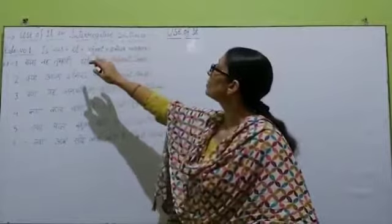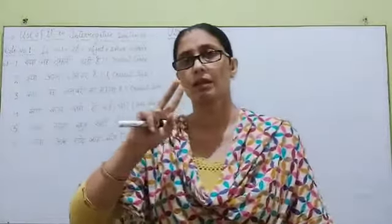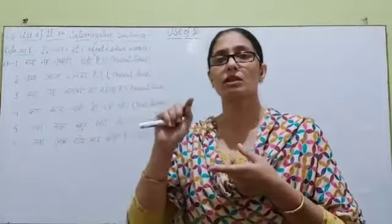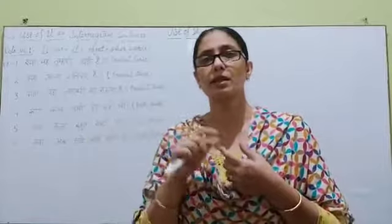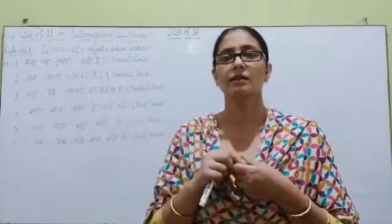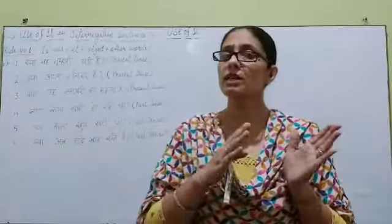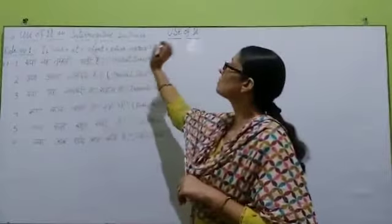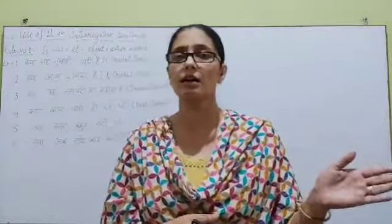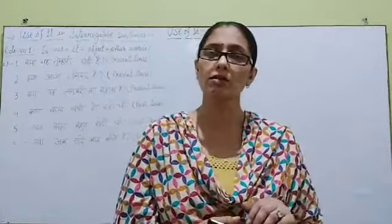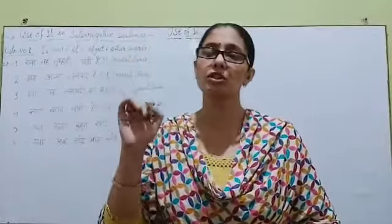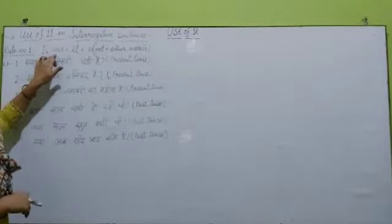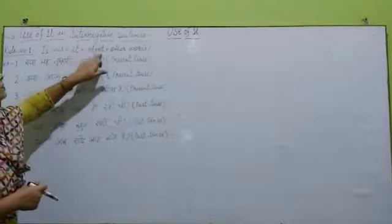So now we can see that we have two rules in interrogative. The first rule applies to sentences which start with 'is this your house' or 'are you going to school?' type questions. The rule structure is: Is/Was + it + object + other words. If it is present tense, it will start with 'is'; if it is past tense, it will start with 'was'. At the end, we place a question mark. So Rule 1: is or was (according to tense), उसके बाद it, फिर object, फिर other words.